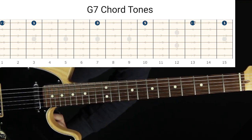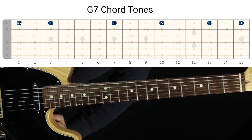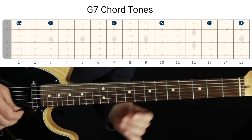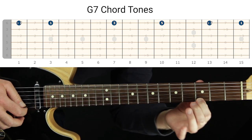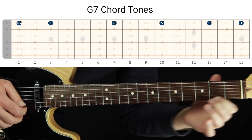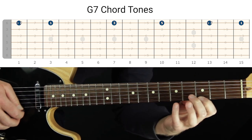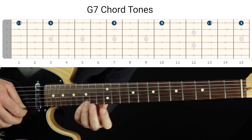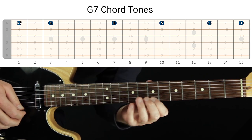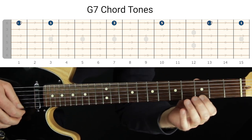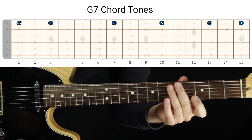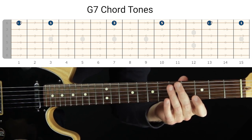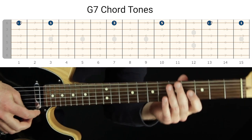Let's move on to the dominant seven chord type and do exactly the same steps. Chord tones along the top string: this is the root of G7, flat seven, root, three, five, flat seven, root. Make sure you can see those go up and down. We'll fly through the steps a little faster — you get the point, so spend time with it yourself.